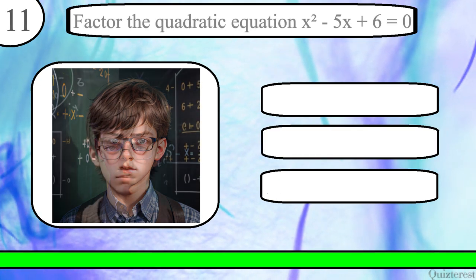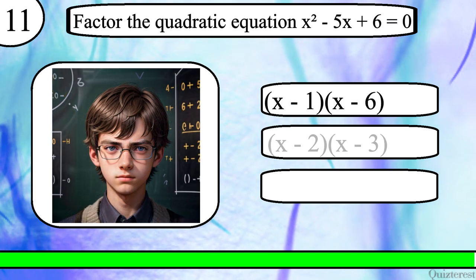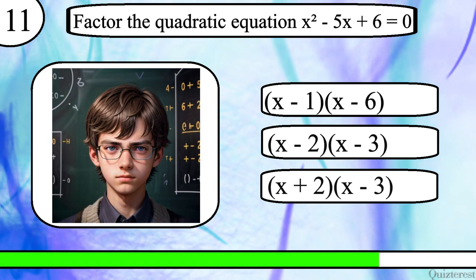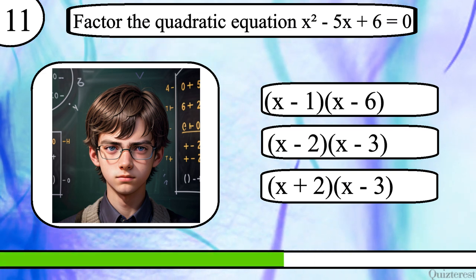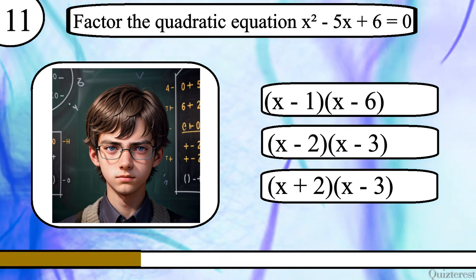Question 11. Factor the quadratic equation x squared minus 5x plus 6 equals 0. x minus 1 times x minus 6, x minus 2 times x minus 3, or x plus 2 times x minus 3. The correct answer is x minus 2 times x minus 3.